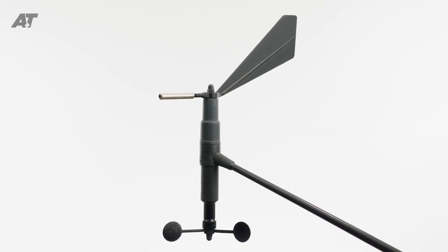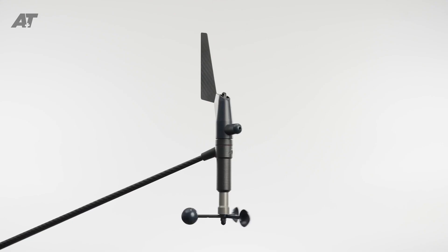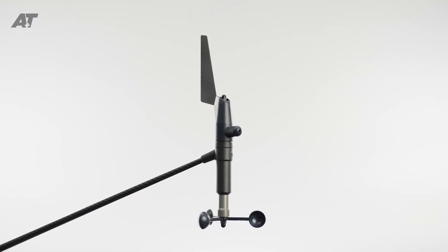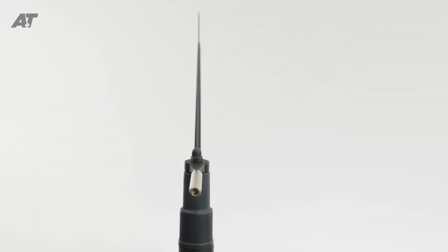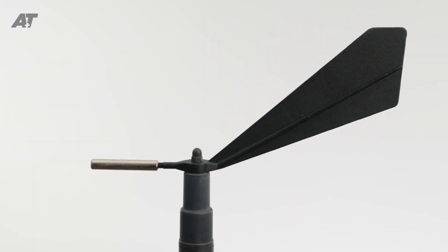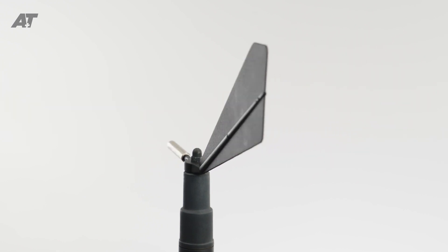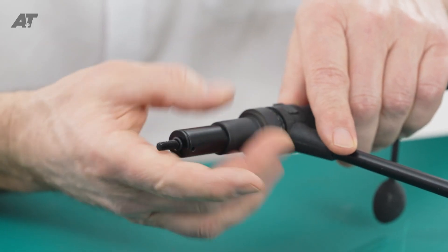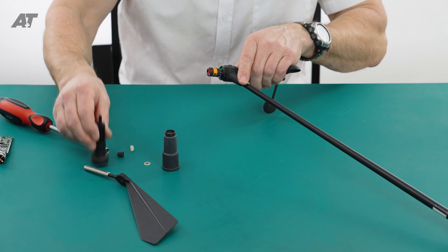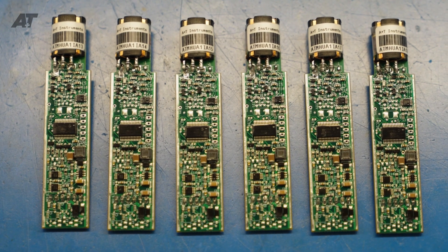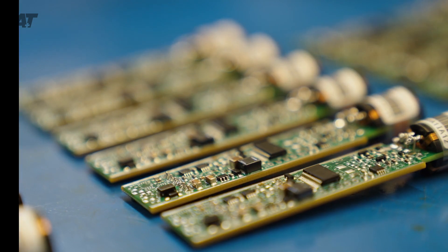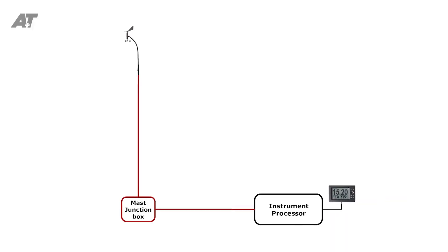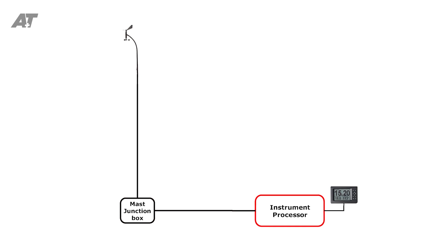This is a B&G 213 wind sensor and here is the A&T upgrade product. If it has stopped working but the cups and vane are still turning okay, the most likely reason is failure of the printed circuit board inside. We have a separate video on YouTube and our website on how to change this. Replacement parts including this PCB are held in stock by A&T. Other problems are a wiring issue or a problem with the instrument processor.